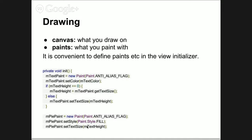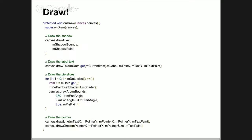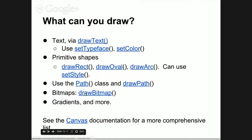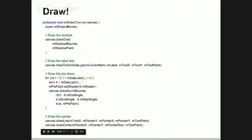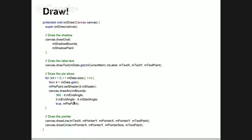When you draw, you have the canvas and paints. Paints are initialized by objects that have attributes, so you do that in the initializer. Then you draw, which is done by implementing the method onDraw. You call super.onDraw(canvas) in case there is anything to be done by the super class. Otherwise, this example is trying to draw a pie chart - it draws first the shadow of the pie and then the various slices.